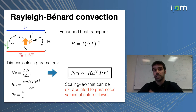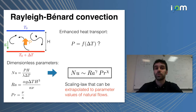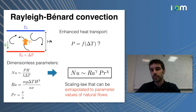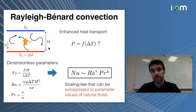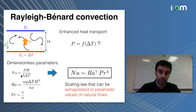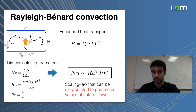The central question here is to understand how much heat the turbulent flow is going to transport from the bottom plate to the top one. What is the enhanced heat flux P as a function of the temperature drop ΔT between the two plates? We're going to ask this in terms of dimensionless parameters, making the heat flux dimensionless by dividing it by the diffusive heat flux, where λ is the thermal conductivity of the fluid.